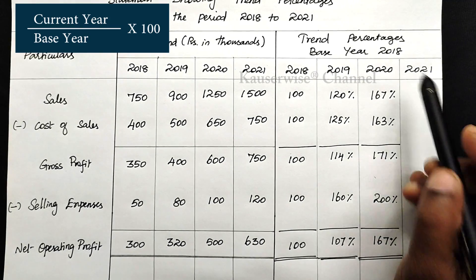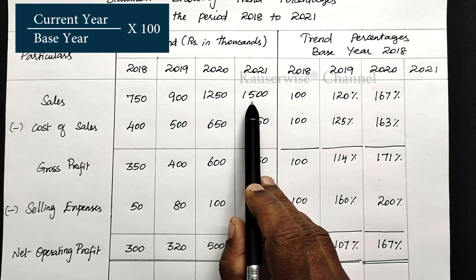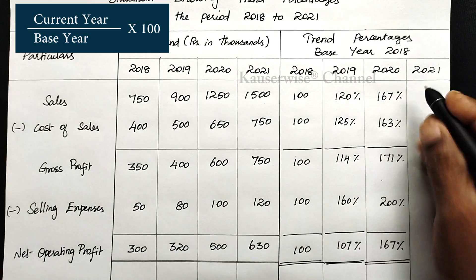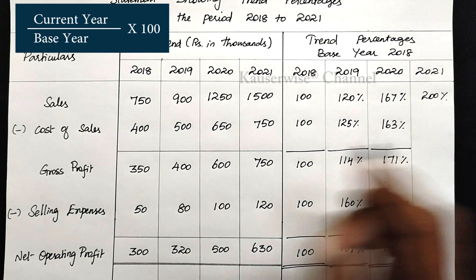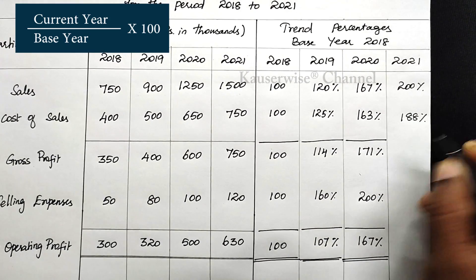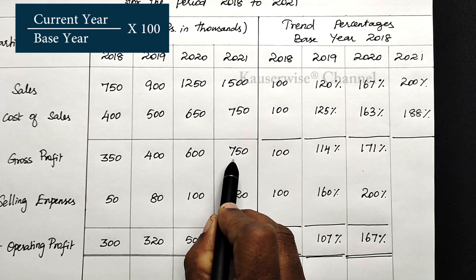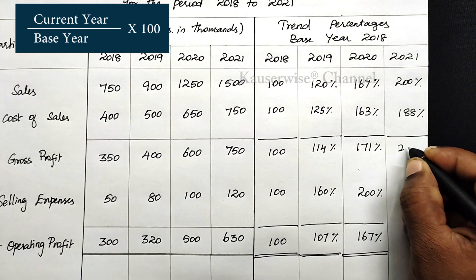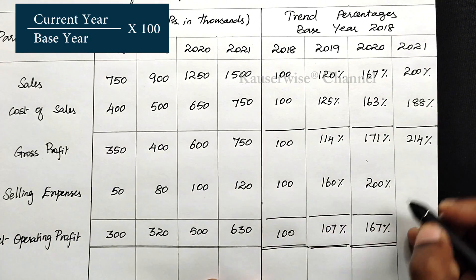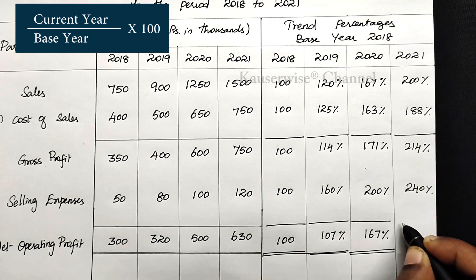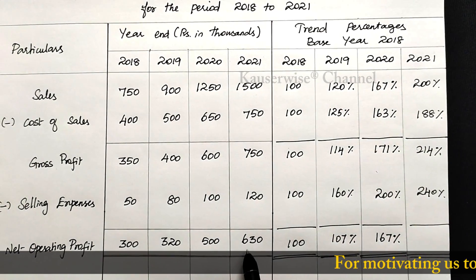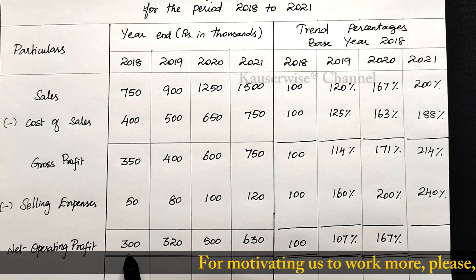Now calculate trend percentage for 2021. For sales: 1500 divided by 750 into 100 gives 200%. For cost of sales: 750 divided by 400 into 100 gives 188%. For gross profit: 750 divided by 350 into 100 gives 214%. For selling expense: 120 divided by 50 into 100 gives 240%. For net operating profit: 630 divided by 300 into 100 gives 210%.